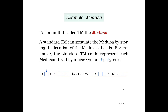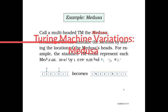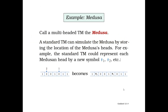One of the variations of Turing machines is called a Medusa. A Medusa is a multi-headed Turing machine. The name follows from Greek mythology where there was a monster which had snakes for its hair — multiple heads of snakes. In this case, the Turing machine acts like a Medusa by having multiple heads. Let's try to understand how a standard Turing machine can simulate a Medusa.